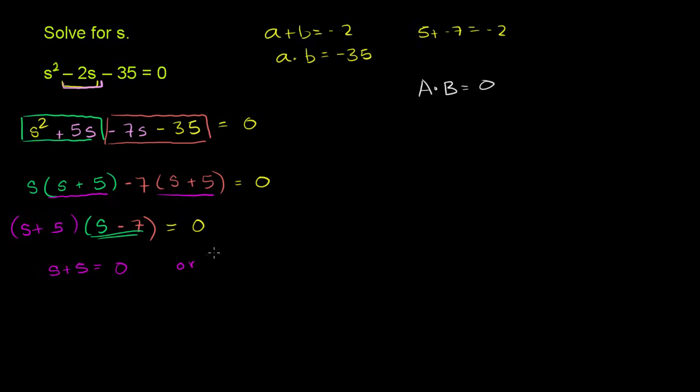or s minus 7 is equal to 0. Or, I'll do that in just green, or s minus 7 is equal to 0. And so you have these two equations. Actually, we could say and or. It could be or and, either way, both of them could be equal to 0.